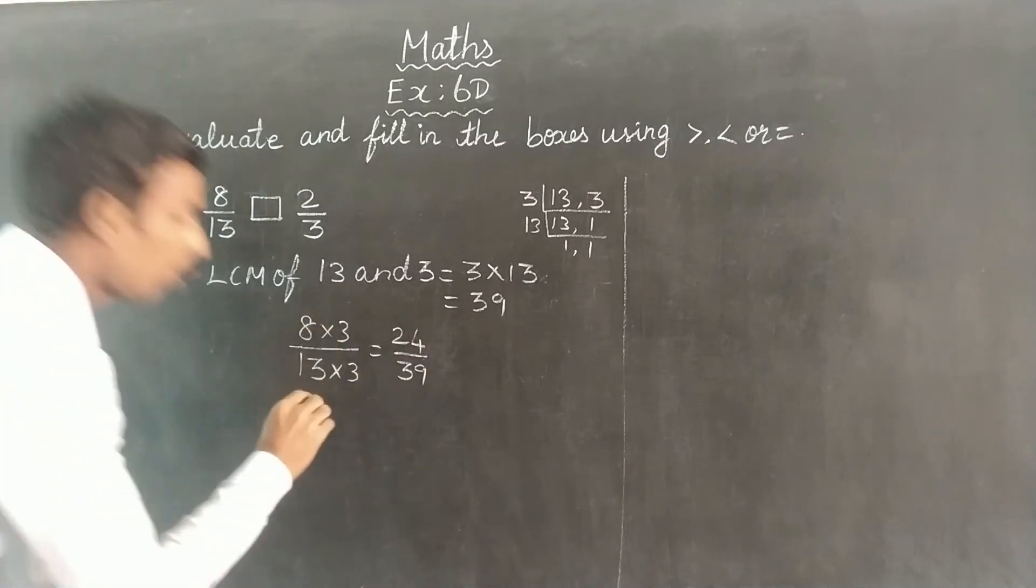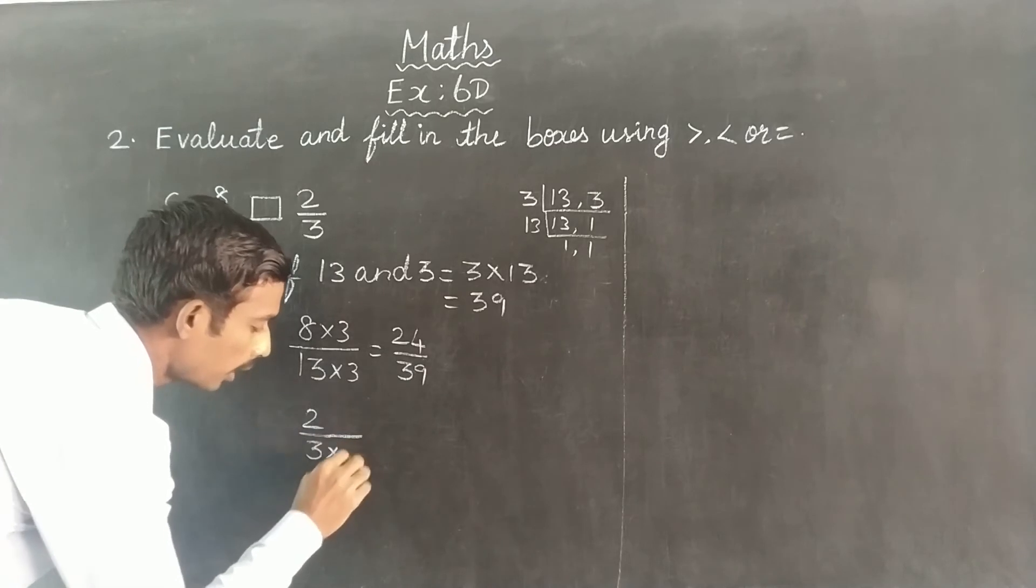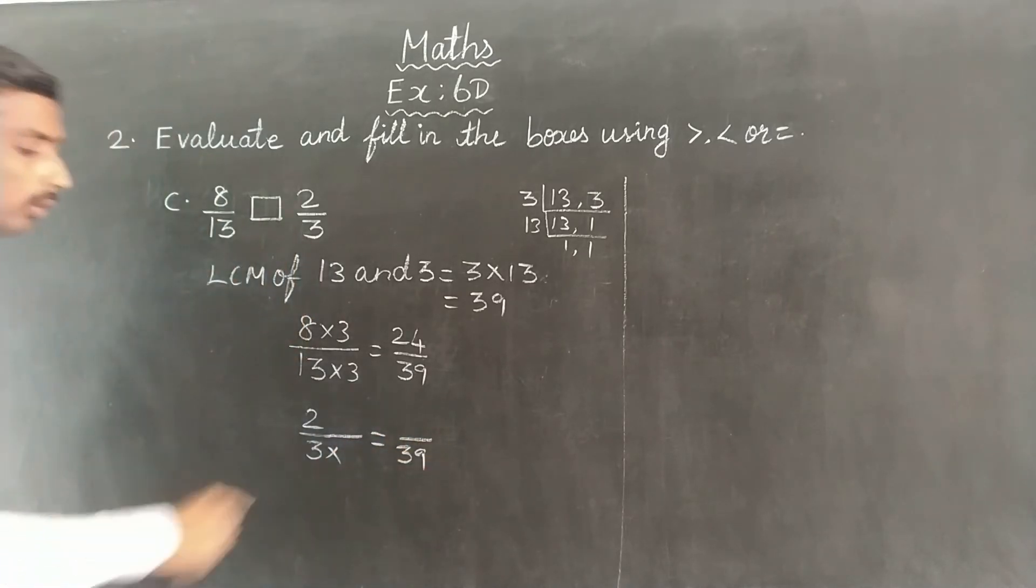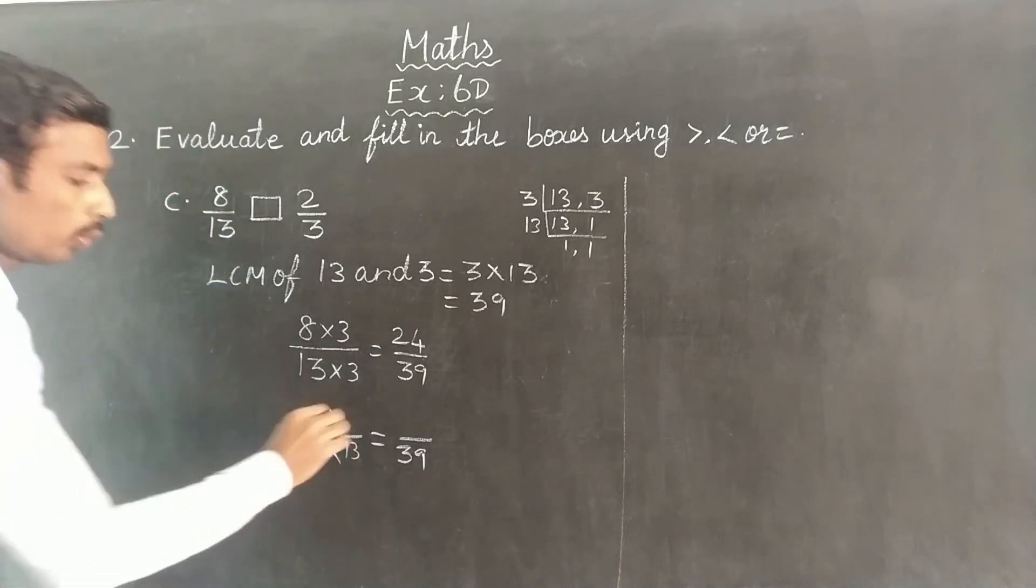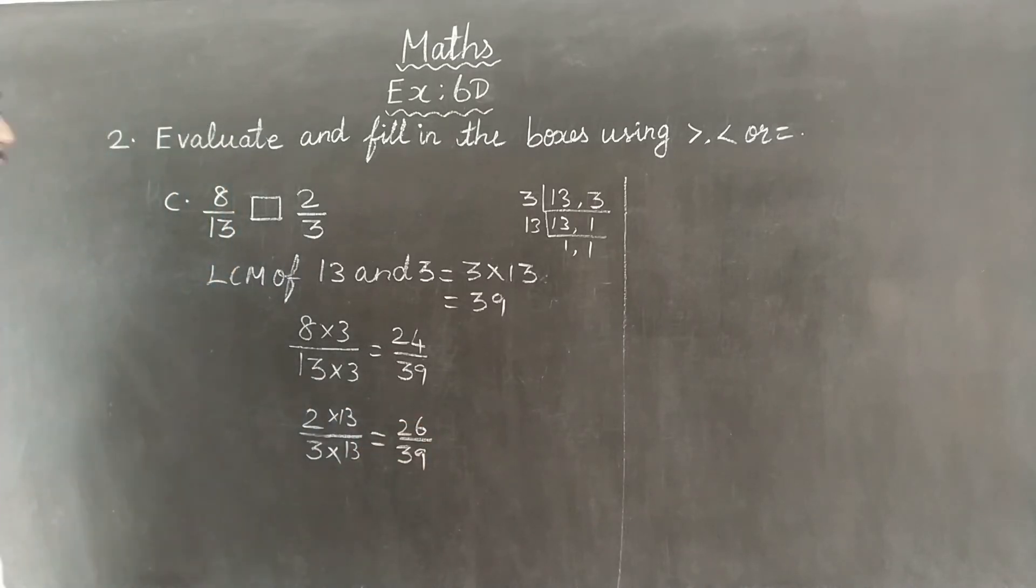Next number is 2/3. To convert this to denominator 39: 3 times 13 is 39, so 2 times 13 is 26. So we get 26/39.